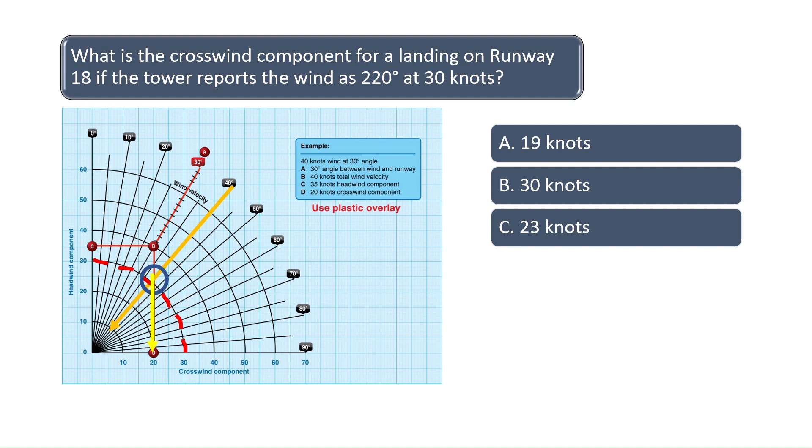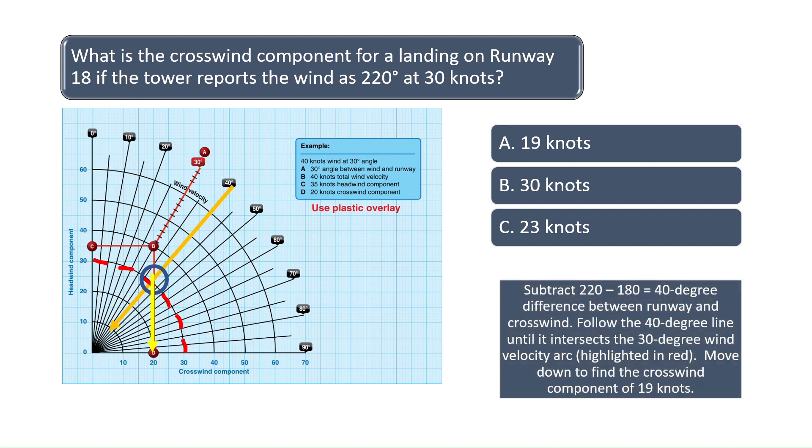The crosswind component is just to the left of 20 degrees, so we can see the crosswind given the conditions is 19 knots. The correct answer is A.